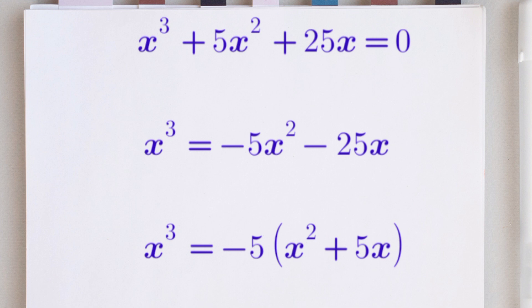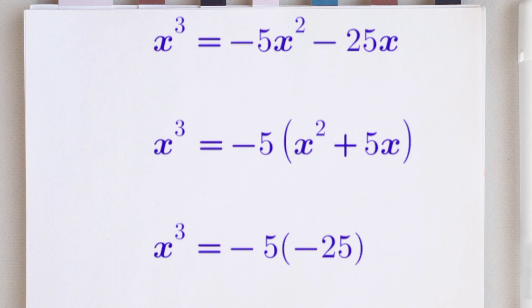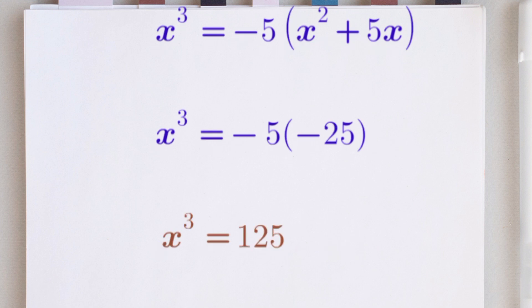Remember when I said we are going to use our equation 2 again? Now is the time. We have x raised to the power of 2 plus 5x in this bracket. In our equation 2 we said that x raised to the power of 2 plus 5x is equals to minus 25. So we are going to simply substitute that. And finally, we have that x raised to the power of 3 is equals to minus 5 multiplied by minus 25.